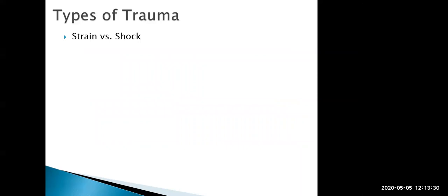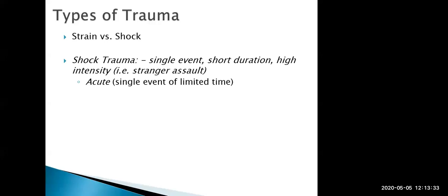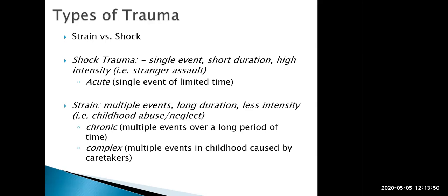There are different types of trauma. Shock trauma, like an acute stressor, is a single event, short in duration and high in intensity — a stranger assault, mugging, or car accident. Strain trauma involves multiple events that are long in duration and tend to be lower in intensity — not because the trauma itself is less intense, but because the person has begun to predict and habituate to it. Examples include domestic violence or childhood abuse. The very first time they experience it the intensity is high, but by the 27th time the intensity has dropped because of habituation.